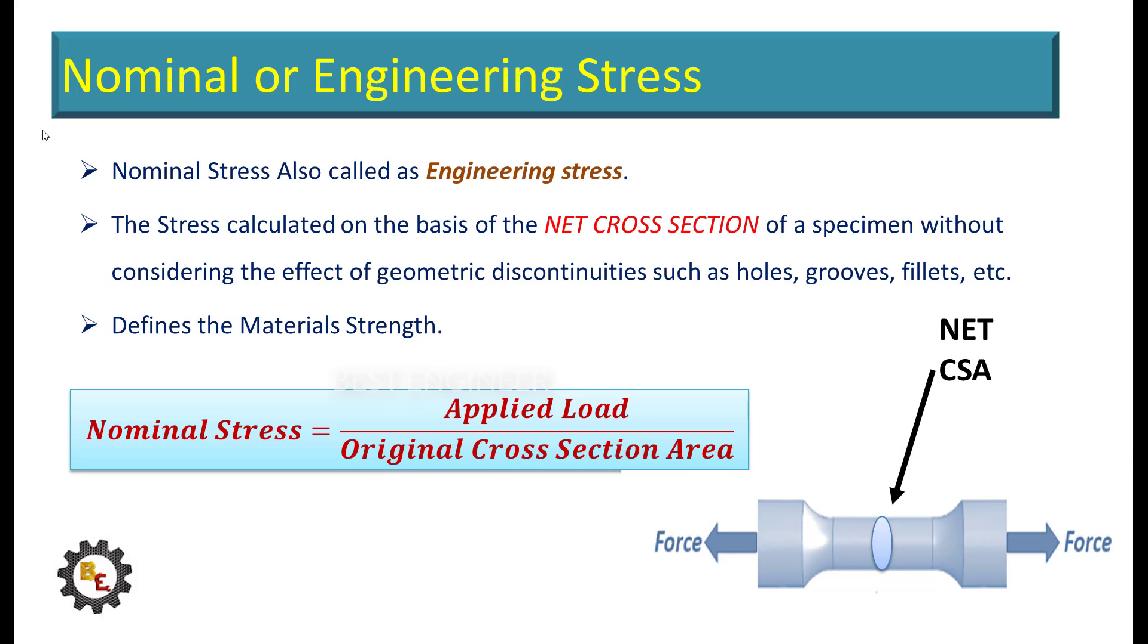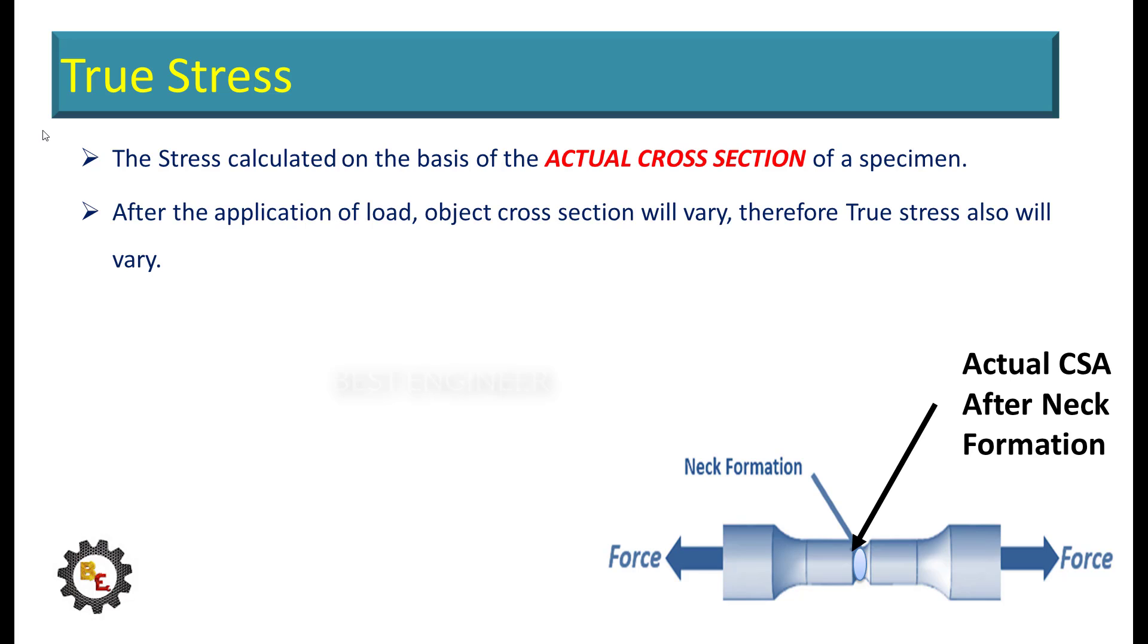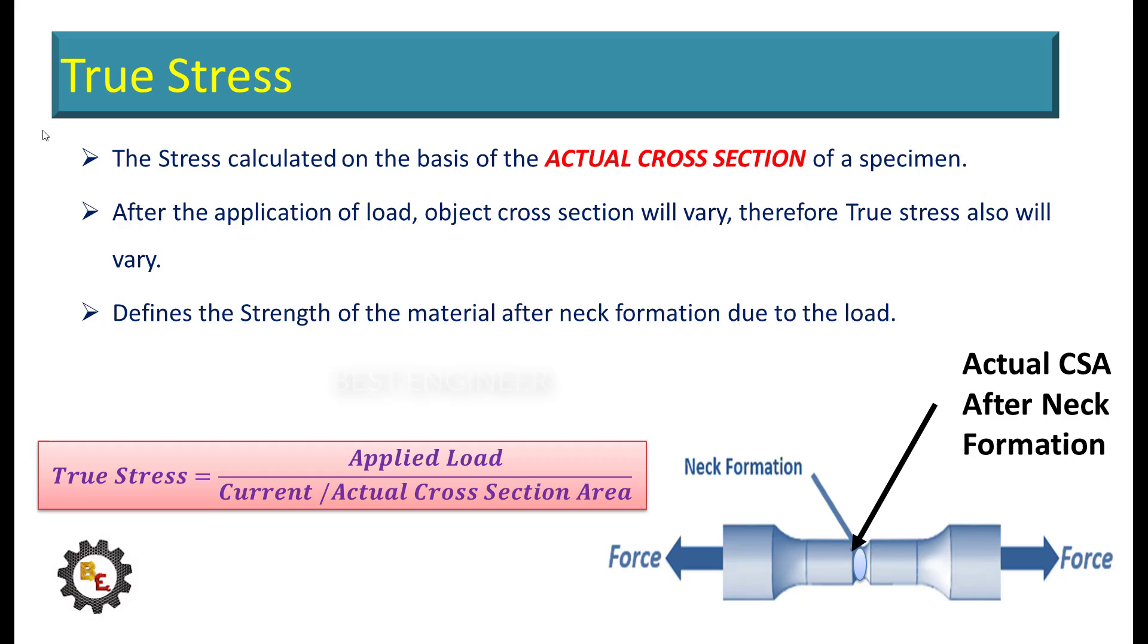Next, true stress. The stress is calculated on the basis of the actual cross-section of the specimen. After the application of load, the object cross-section will vary. Therefore true stress also will vary. It defines the strength of the material after neck formation due to the load.